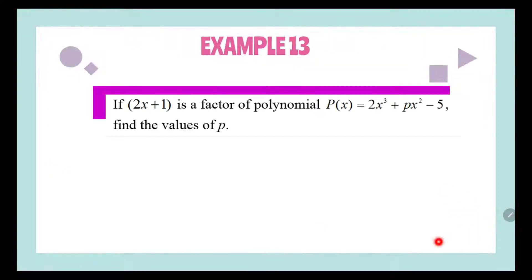Now let's look at Example 13. Given that 2x + 1 is a factor of polynomial P(x) = 2x³ + Px² − 5, find the value of P.